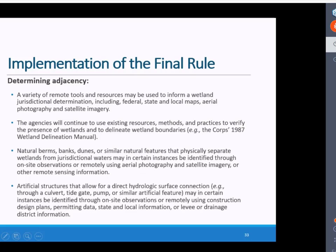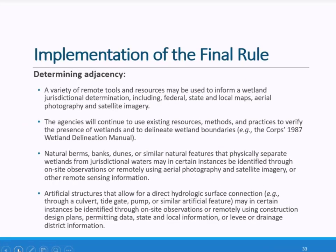Such natural features may in certain instances be identified through on-site observations or remotely using aerial photography and satellite imagery. Another way a wetland may be jurisdictional is if it is physically separated from a paragraph A1 through 3 water only by an artificial dike, barrier, or similar artificial structure, so long as that structure allows for a direct hydrologic surface connection in a typical year through a culvert, flood or tide gate, pump, or similar artificial feature. Artificial structures may be identified through on-site observation or remotely using construction design plans, permitting data, state and local information, or levee or drainage district information.